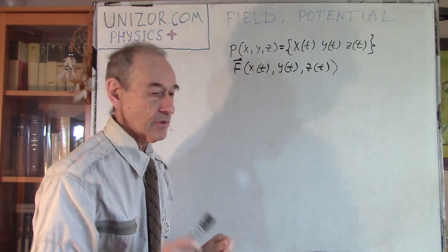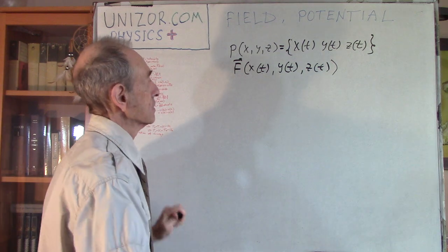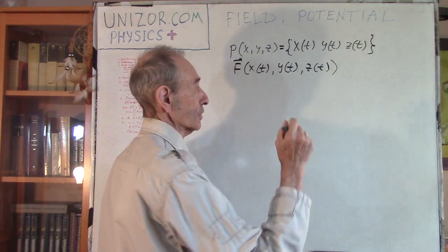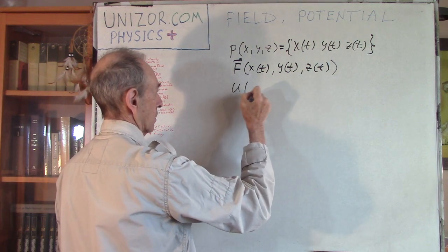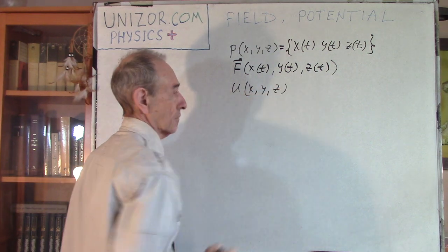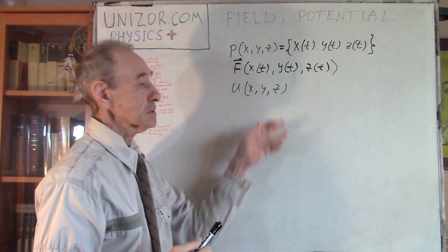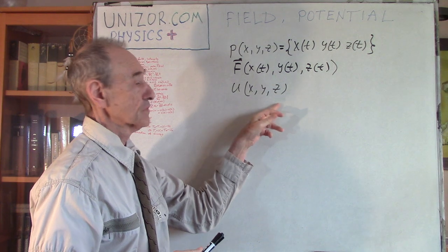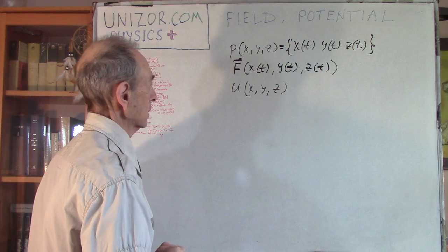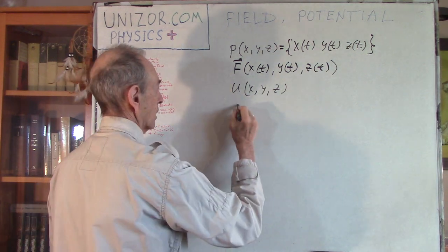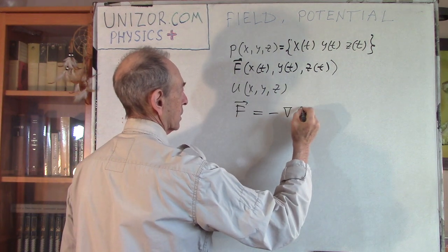Now what is very important - and this is part of the definition of the field - is that there is also at any point a scalar function. A scalar function is basically a real function of three arguments which, for any values of those arguments, takes some function value. And this is the definition of the field: force F = -∇U.